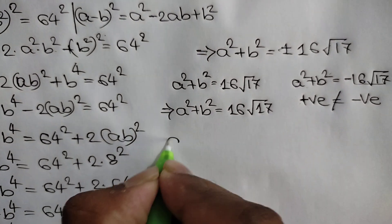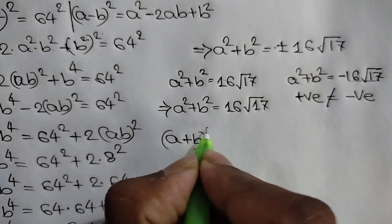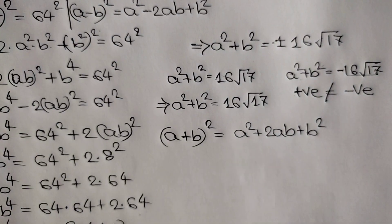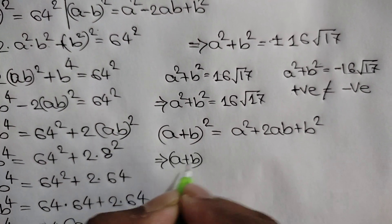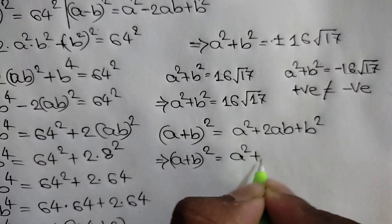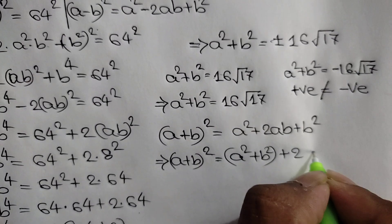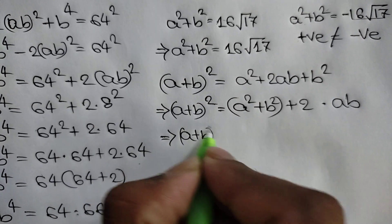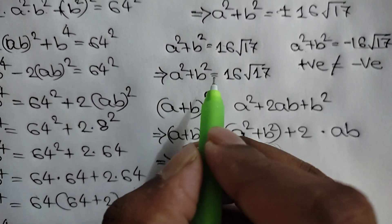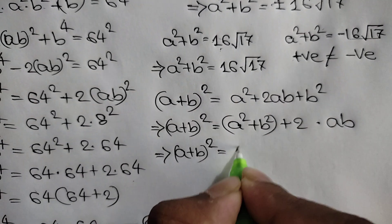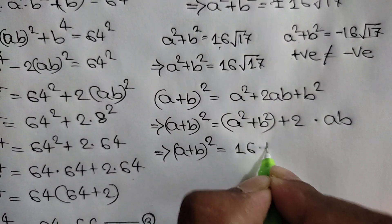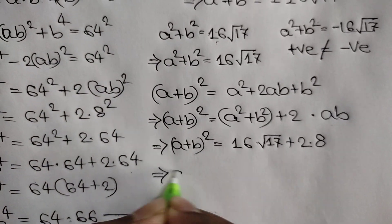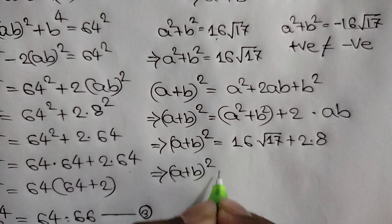Now we know that a plus b whole squared is equal to a squared plus 2ab plus b squared. Rearranging, a plus b whole squared equals a squared plus b squared plus 2 times ab. Substituting, a plus b whole squared is equal to 16 square root of 17 plus 2 times ab. Since ab equals 8, this gives 16 square root of 17 plus 16.